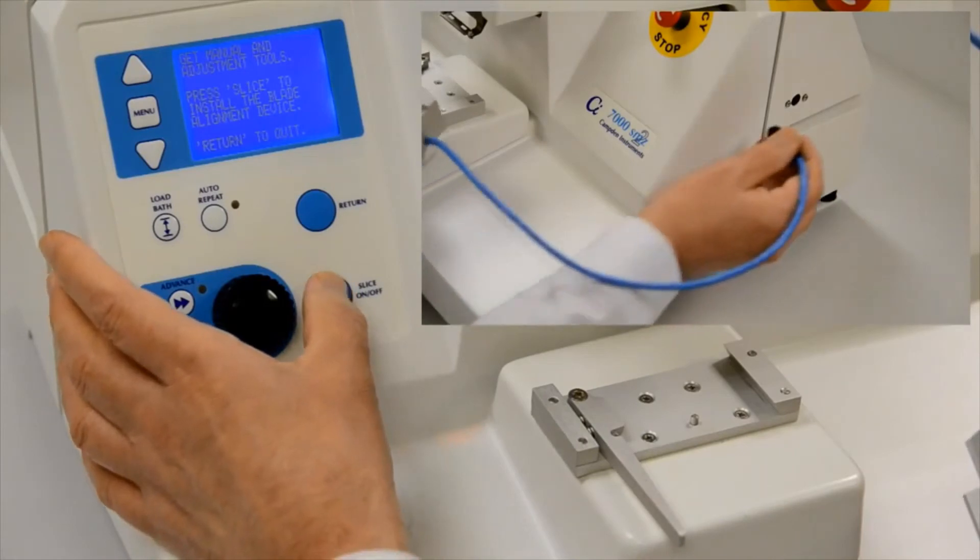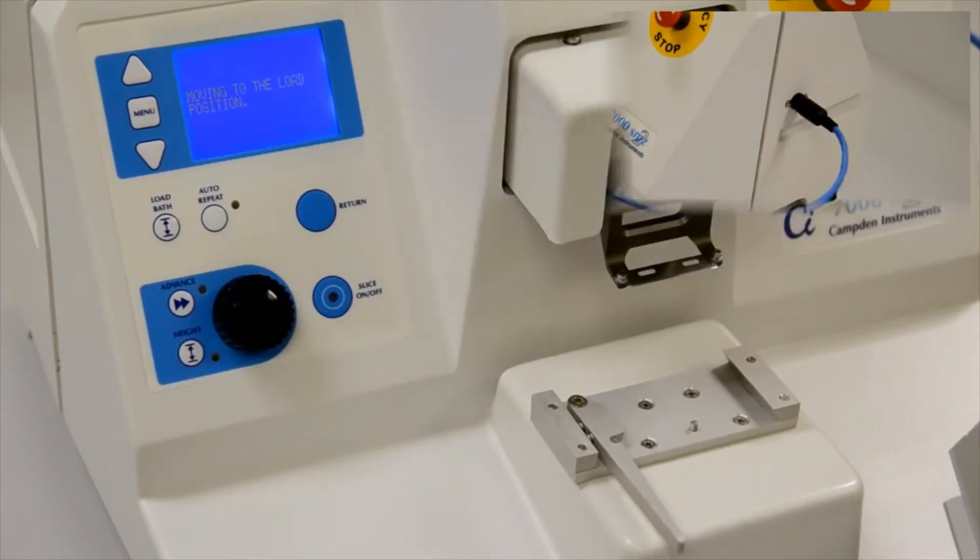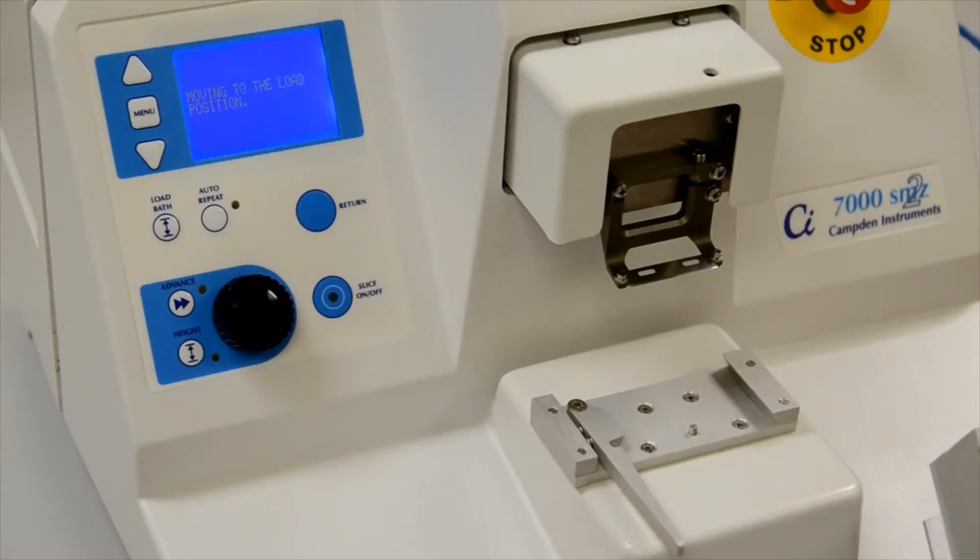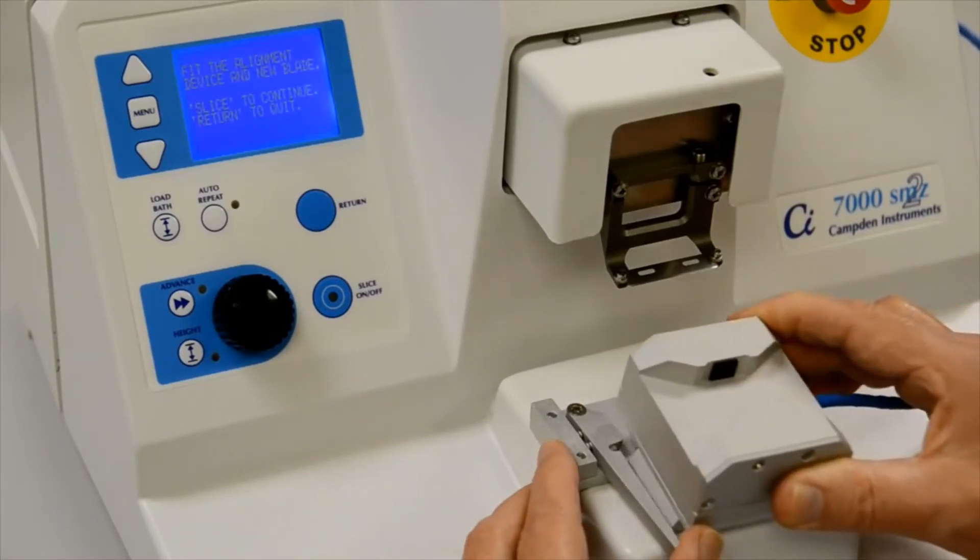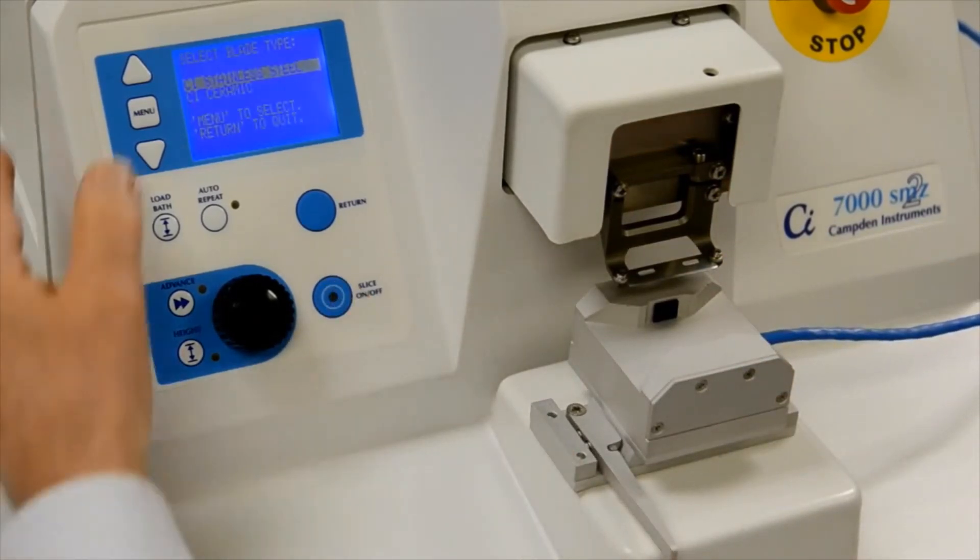Connect the Opti-Cal unit. Once you have done this, the instrument will reposition the vertical stage and ask you to fit the Opti-Cal unit to the stage. Confirm that it has been fitted and confirm the type of blade.